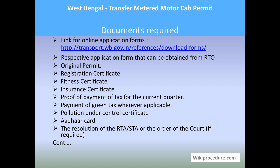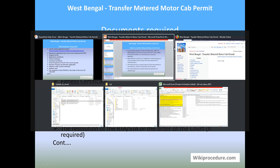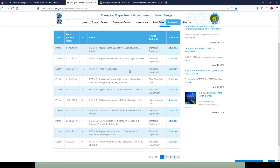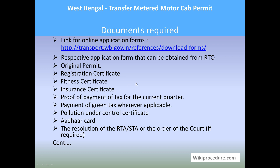The documents required for this procedure: you need to download the form using the link provided here, which gives access to the forms page of the West Bengal State Transport Portal. The application form can also be obtained directly from the RTO. Required documents include: original permit, registration certificate, fitness certificate, insurance certificate, proof of payment of tax for the current quarter, payment of green tax wherever applicable, and pollution under control certificate.